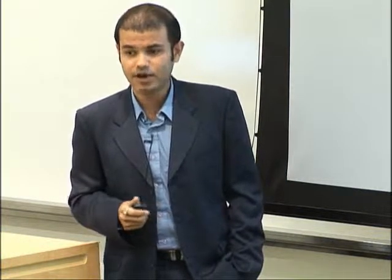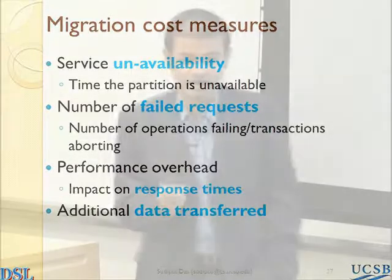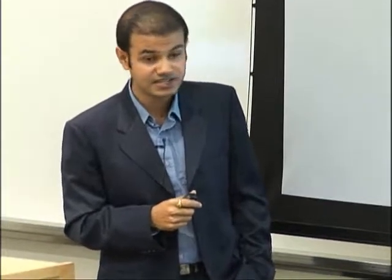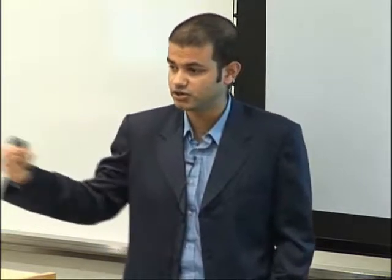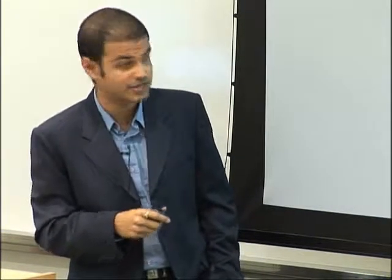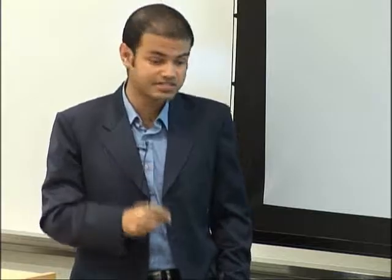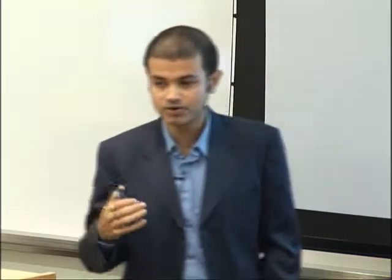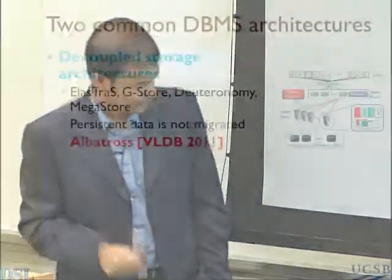Stop-and-copy is expensive because it results in an unavailability window, and I want minimal unavailability during migration — if possible, no unavailability. I also want to minimize any impact on the tenant while doing migration. Migration is done for system management — the tenant should not be aware of it. I want to minimize the number of failed requests, have minimal impact on the performance of executing transactions, and minimize the amount of data transferred as a result of migration.